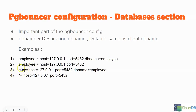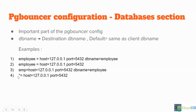In the third example, the alias is EMP but the backend DB name is employee — any connections coming in as EMP will be mapped to employee on this host at 5432. Finally, using a wildcard: star equals host equals 127.0.0.1 (localhost) port 5432. In this case, any connections for any DB will be routed to this hostname and port, and the database name will be whatever is specified on the client. You can define the databases section based on your needs.